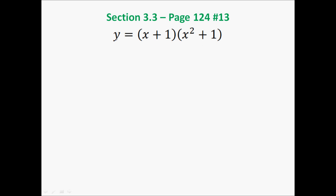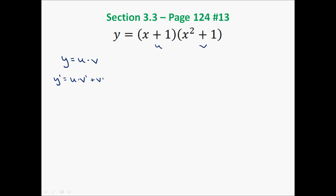Instead, if I want to take the derivative of this whole function y, I need to take the derivative of this factor times this factor, and then add that to the derivative of this factor times this factor. So let's say we had some function y, which was some factor u times some factor v. If I want to find y prime, I cannot do u prime times v prime — that does not work. In order to find y prime, we need to use the product rule, which is u times v prime plus v times u prime.